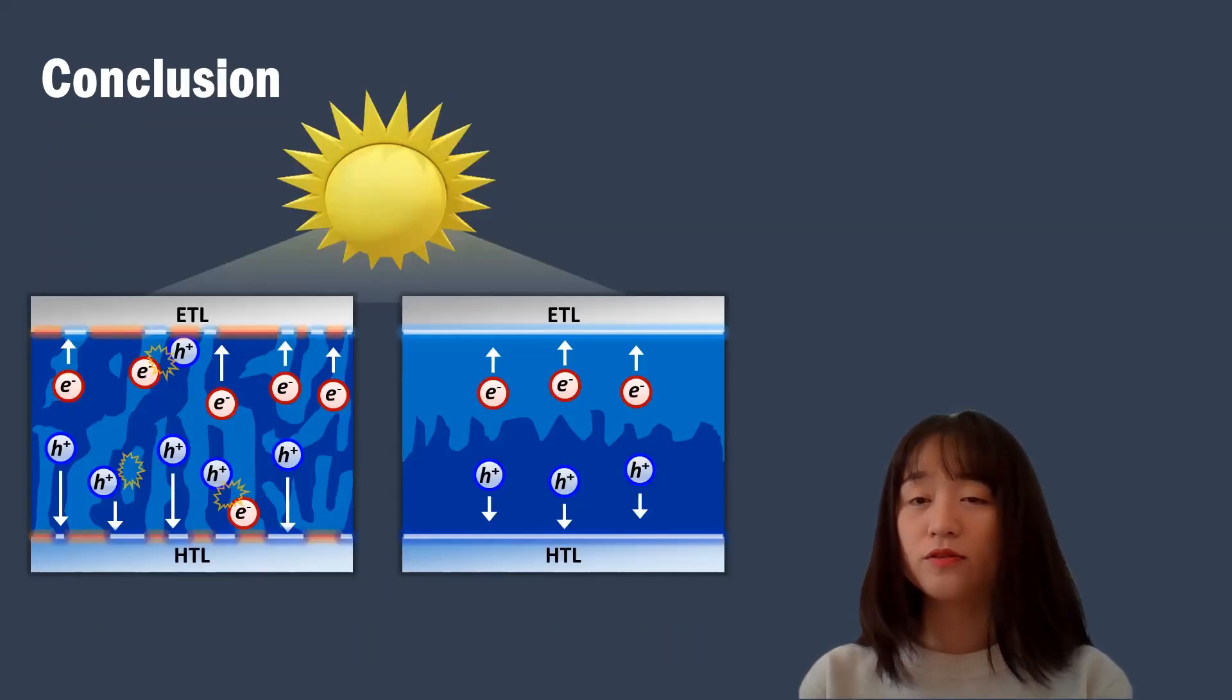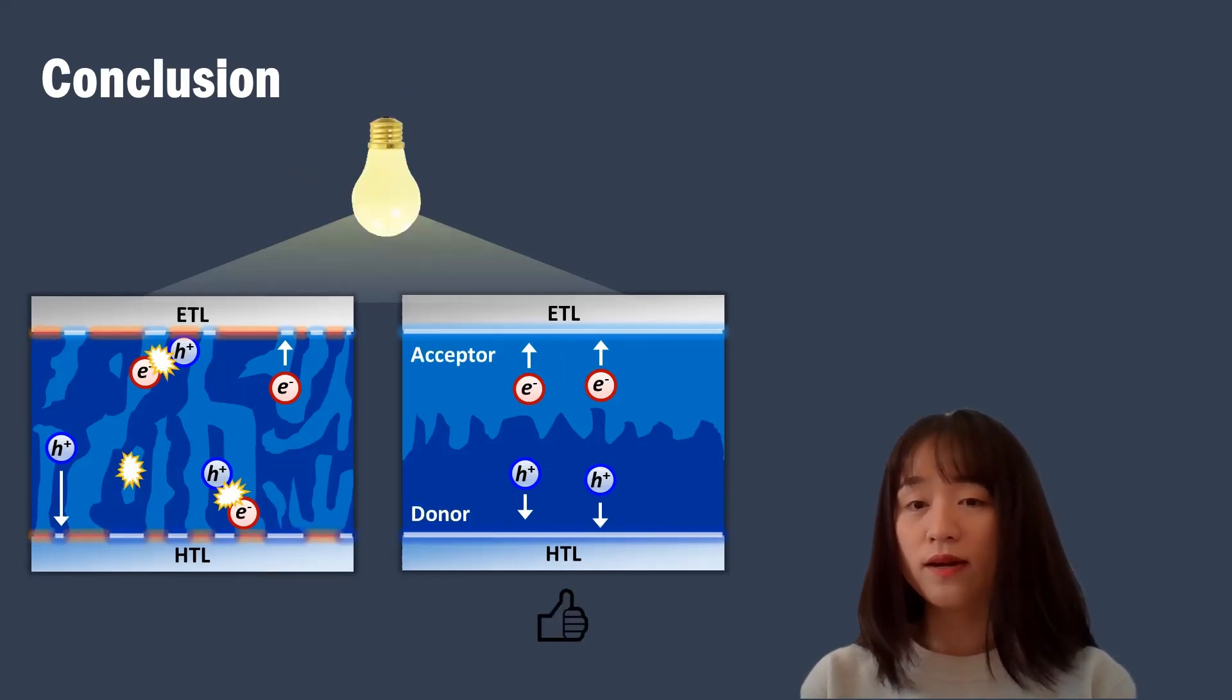Here is a summary. Bulk-heterojunction is actually great structure in terms of efficient photocurrent generation, and charge trapping induced by isolated domains or undesirable interfacial contact can be ignored particularly under one sun illumination. However, indoor light has extremely lower light intensity than one sun. This means generated photocurrent density is also extremely lower. In such low light intensity circumstances, the charge trapping induced by isolated domains or undesirable interfacial contact cannot be ignored, leading to much poorer device performance than bilayer devices.